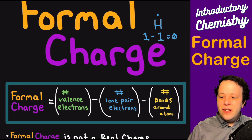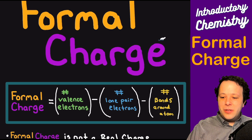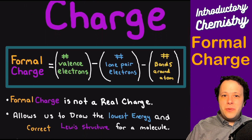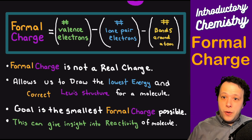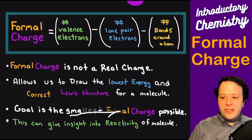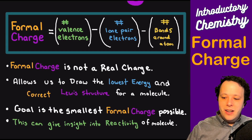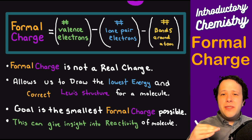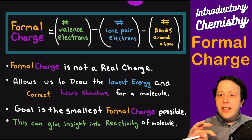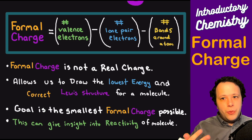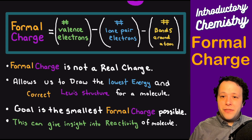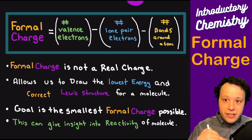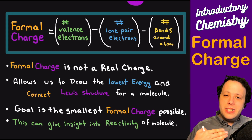So it's taking into consideration all these little parts. We're just counting what we have, and the goal here is to remember that these are not real charges — this allows us to figure out what the correct Lewis structure is. The goal is to have the smallest possible charge on each atom. If you calculate it and get a two or three, that's very large; you want zeros and ones. It should also match your ionic charge for the entire molecule if you have an ion.